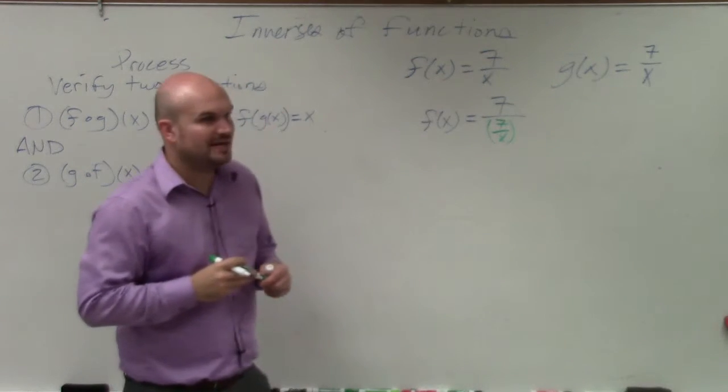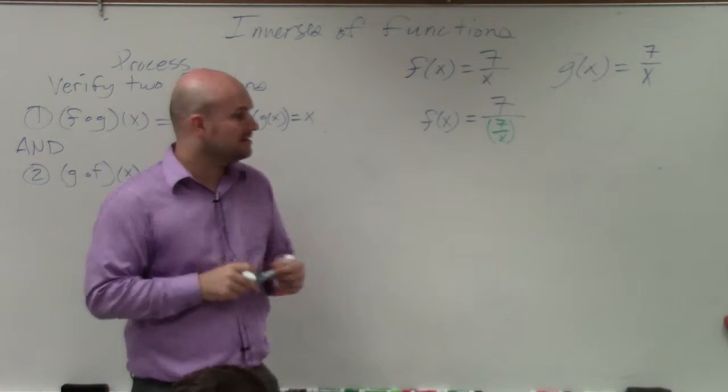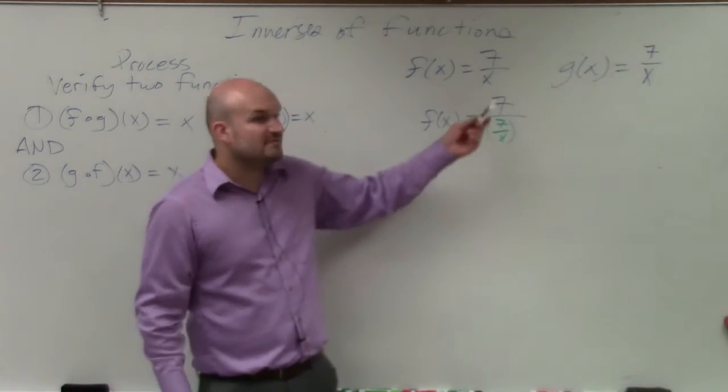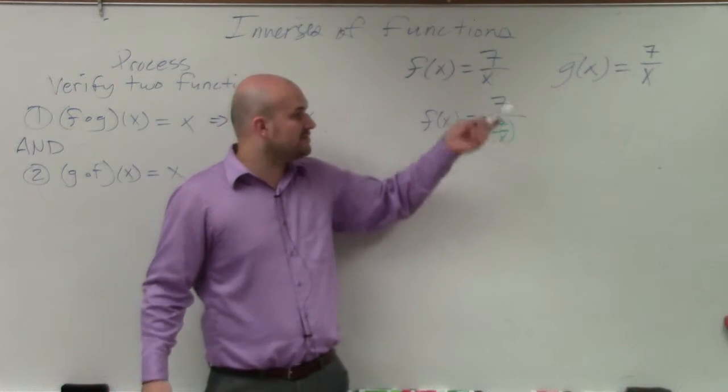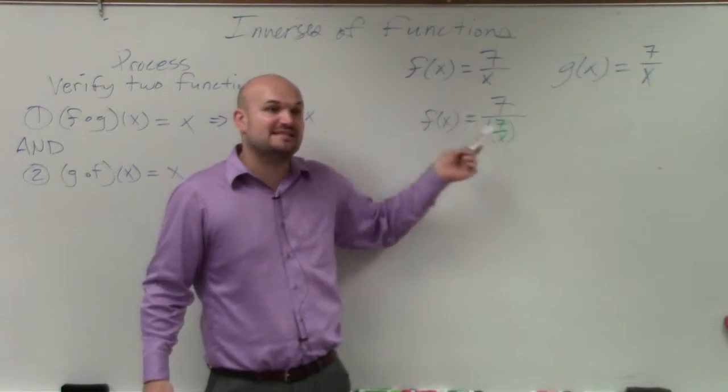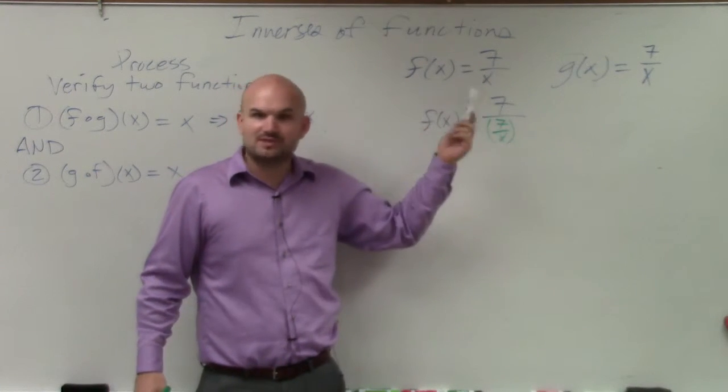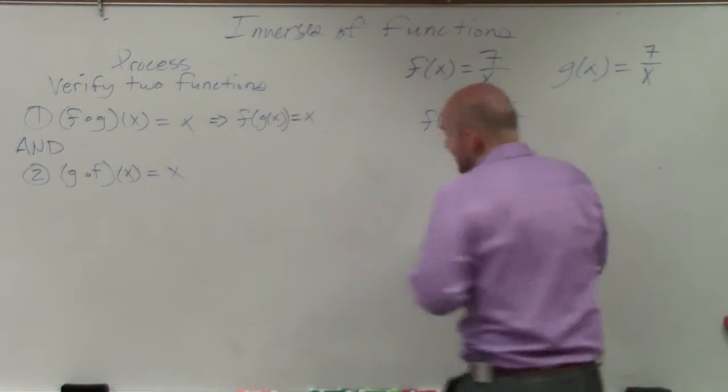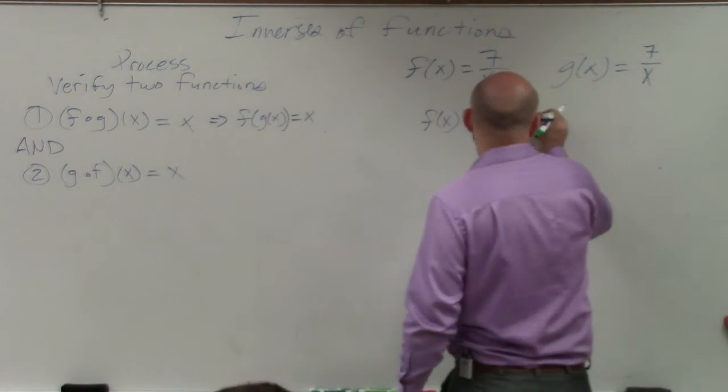Now, how do we simplify something like this? Well, just like we did on that last example, when you have complex fractions, which we're going to review again for you, you have a fraction, you have a number being divided by a fraction. Multiply again by the reciprocal. Just get rid of it. In this case, my reciprocal is x over 7.